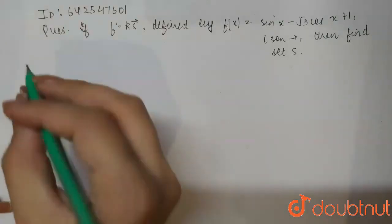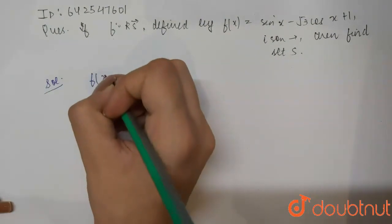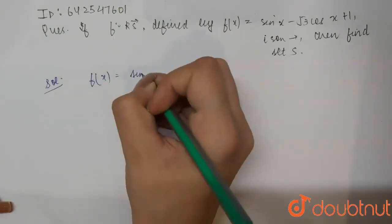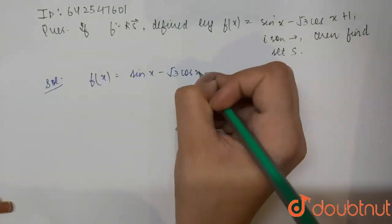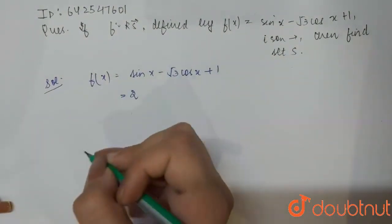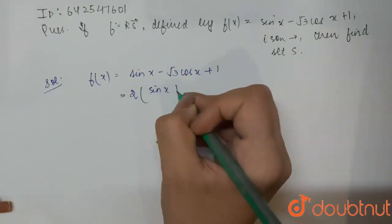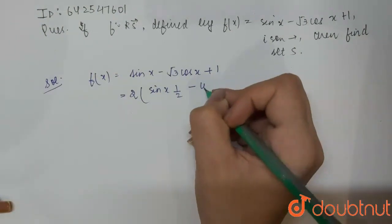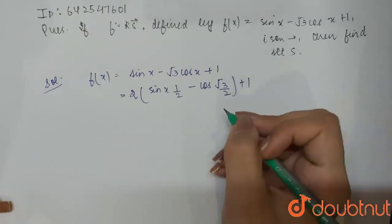So let's start with the solution. See, our f(x) is sin x minus root 3 cos x plus 1. Or we can also write it as 2 of sin x times 1 by 2 minus cos x times root 3 by 2 plus 1.